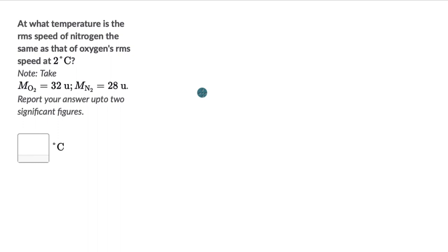Let's solve a couple of questions on RMS speed and average kinetic energy of gas molecules. First question says, at what temperature is the RMS speed of nitrogen the same as that of oxygen's RMS speed at 2 degrees Celsius? And we are given the molecular masses of oxygen and nitrogen. Report your answer to two significant figures and we need to report it in degrees Celsius.